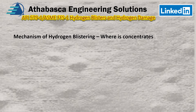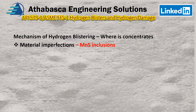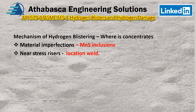The mechanism of hydrogen blistering concentrates where it's the biggest problem: at material imperfections. Manganese sulfide — take that with a grain of salt, I haven't been able to prove it, but it's something I suspect. And also in areas where there are stress risers, which is at weld locations. That's why a lot of analysis in API 579 looks at hydrogen blisters at weld locations, because they know the susceptibility to stepwise cracking and so on in those areas.